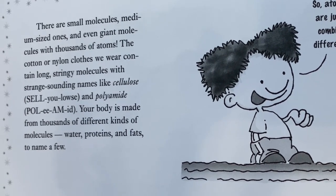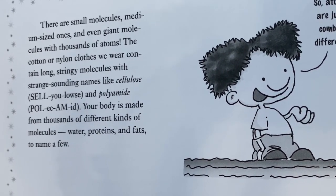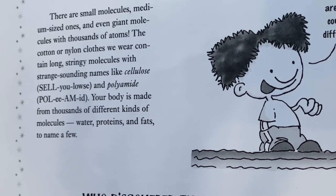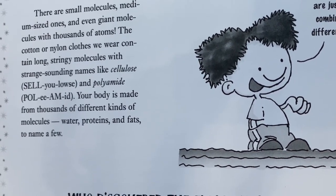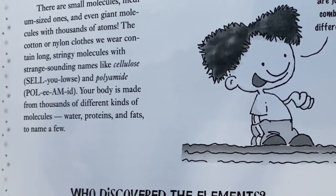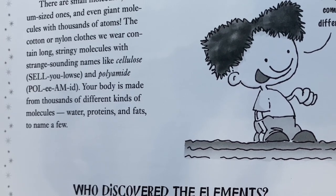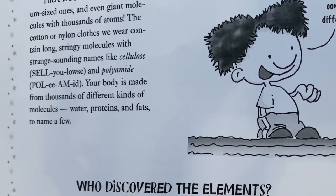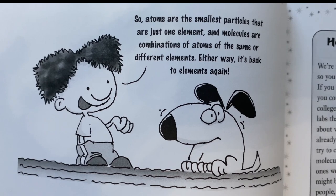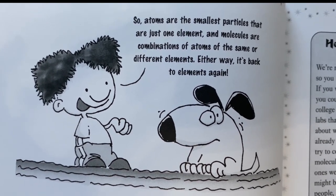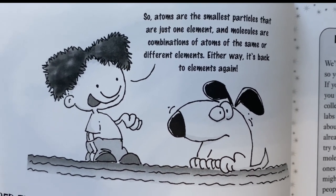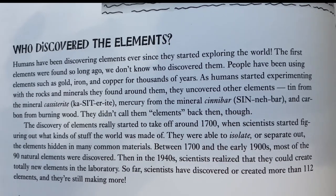There are small molecules, medium-sized ones, and even giant molecules with thousands of atoms. The cotton or nylon clothes we wear contain long stringy molecules with strange-sounding names like cellulose and polyamide. Your body is made from thousands of different kinds of molecules — water, proteins, and fats, to name a few. So atoms are the smallest particles that are just one element, and molecules are combinations of atoms of the same or different elements.